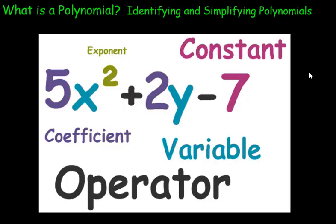This video is going to start by introducing what a polynomial is, other than a very strange sounding title. In front of us here is a graphic showing 5x squared plus 2y minus 7. Look at the color coding on each one of these words — it matches up to what's going on with this thing here, which we call a polynomial.